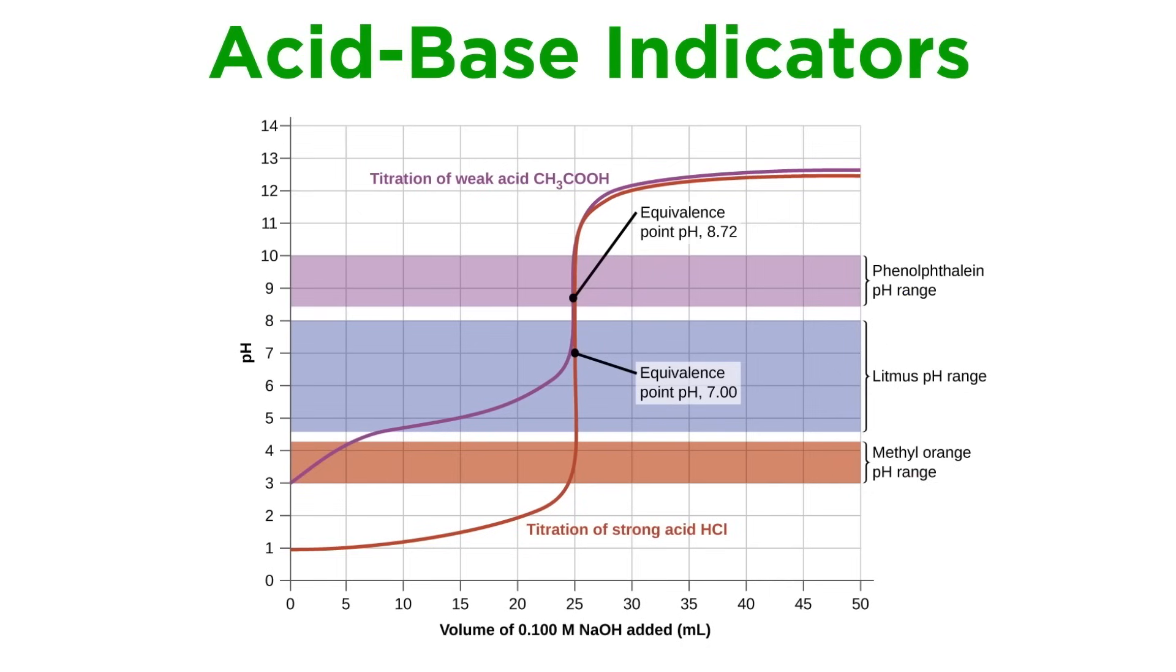Any indicator will have a color change interval, which is the span of around 1 or 2 pH units where the color change will take place. This will depend on the pKa of the indicator.